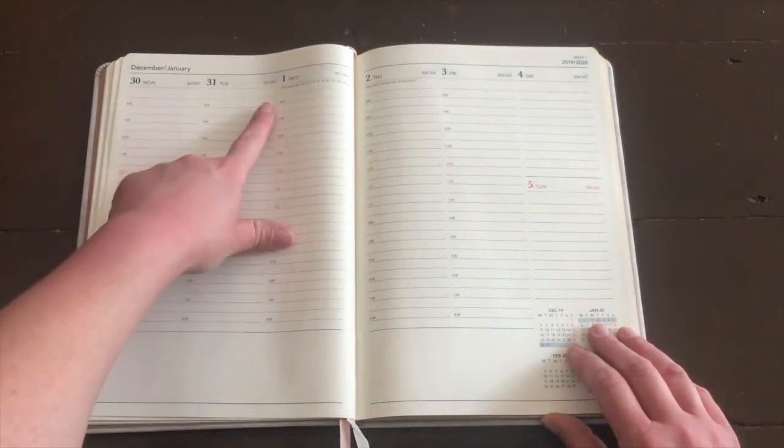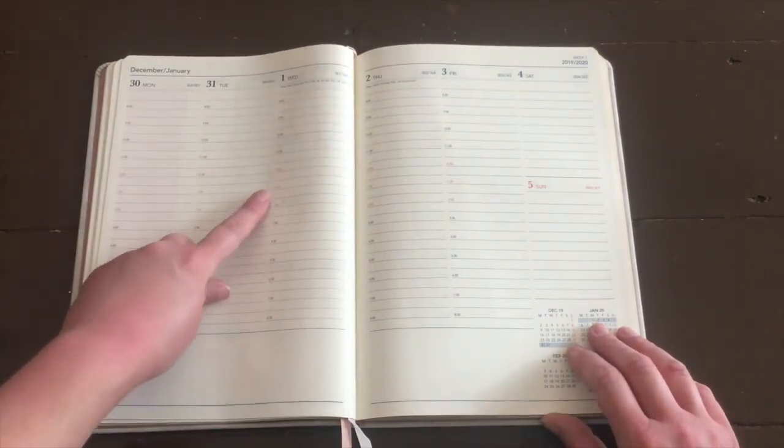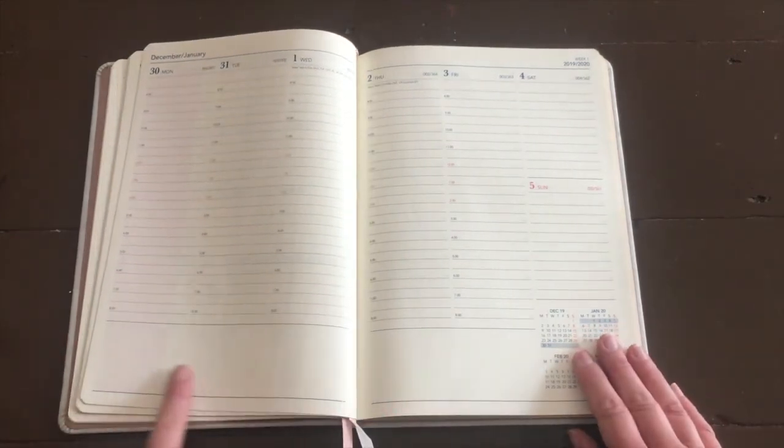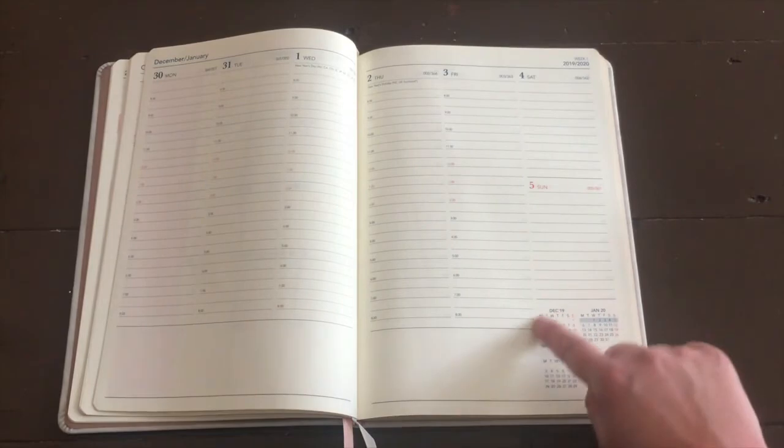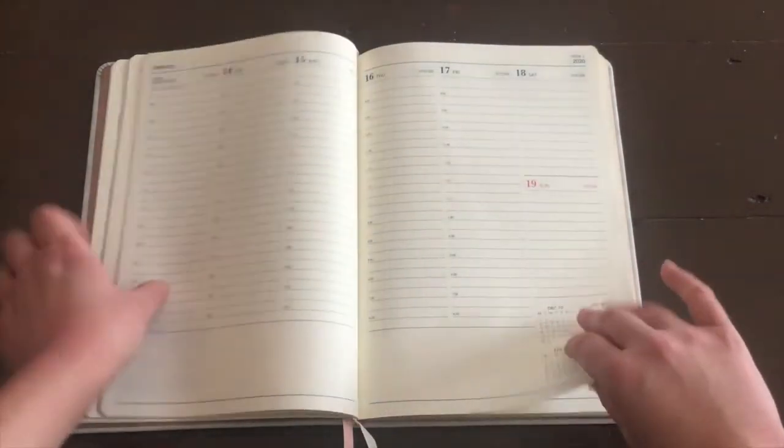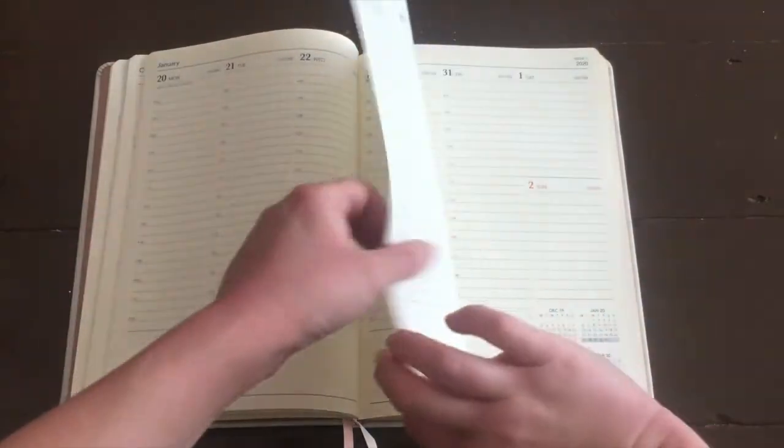Now the week to view pages in this diary are beautiful. There is so much space. It goes across the page for the days of the week and down the page four times and then you have a handy little calendar on the bottom right hand side of every page.